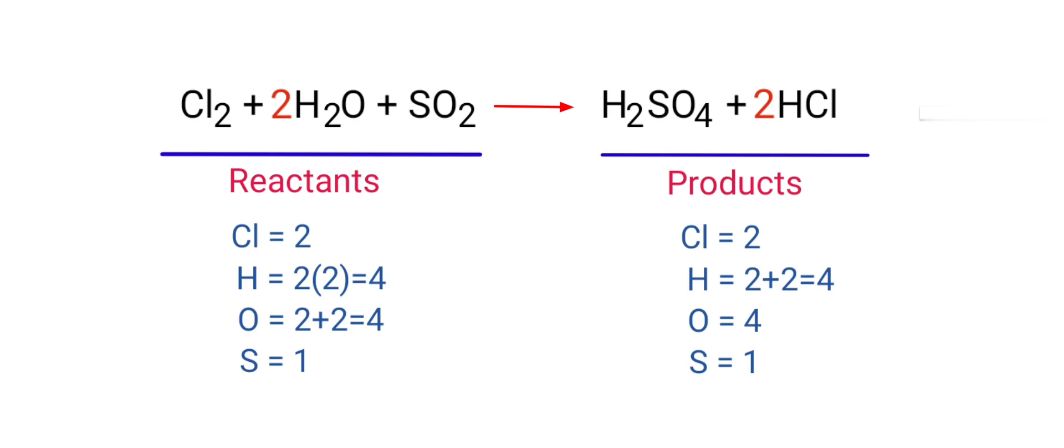The equation is now balanced. There are 2 chlorine atoms, 4 hydrogen atoms, 4 oxygen atoms, and 1 sulfur atom on both sides.